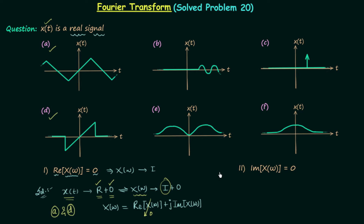Now we move to the second part. In the second part we need to find the time domain signals whose Fourier transform's imaginary part is equal to 0, meaning X(ω) is purely real. This part is homework for you — solve it and post your answer in the comment section.